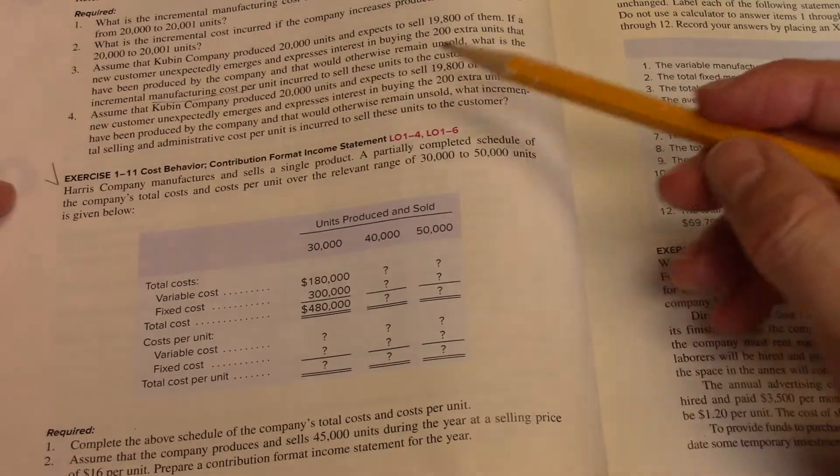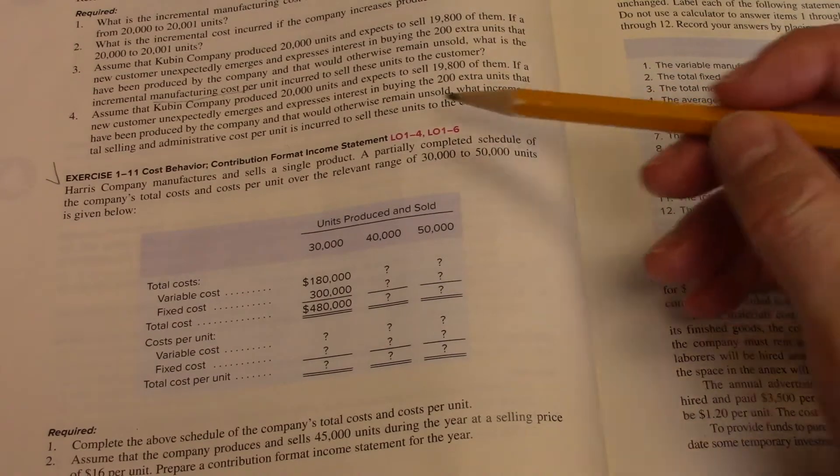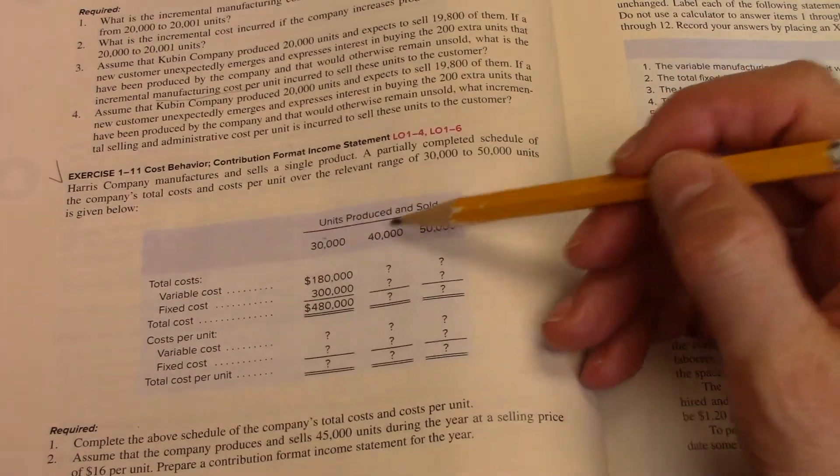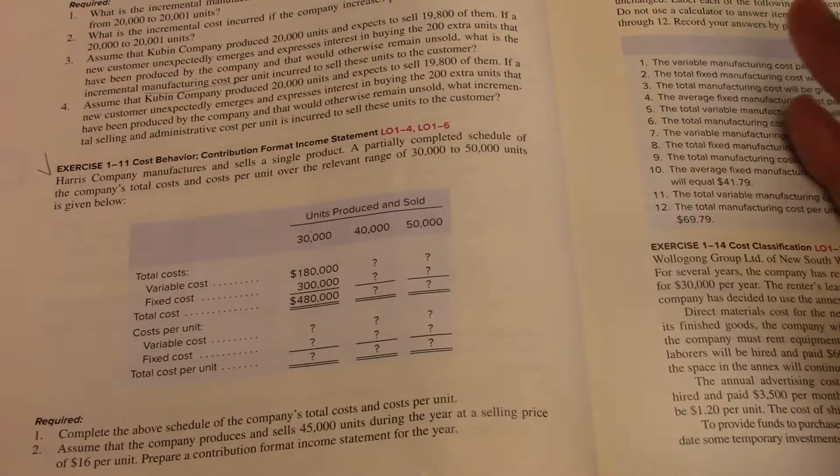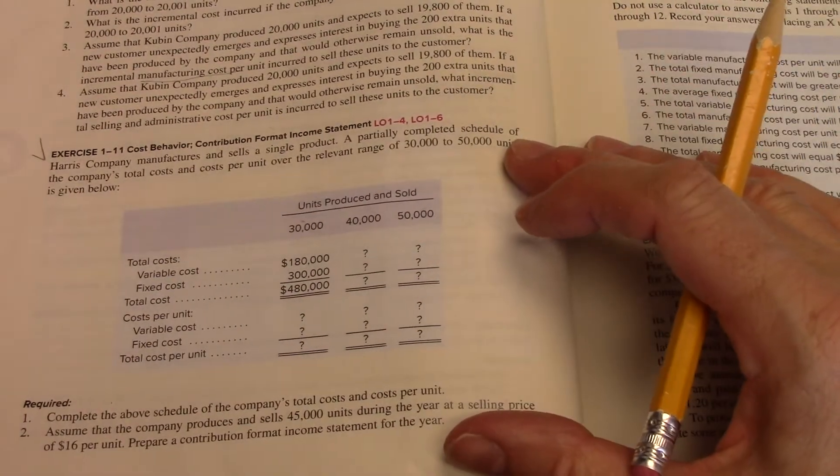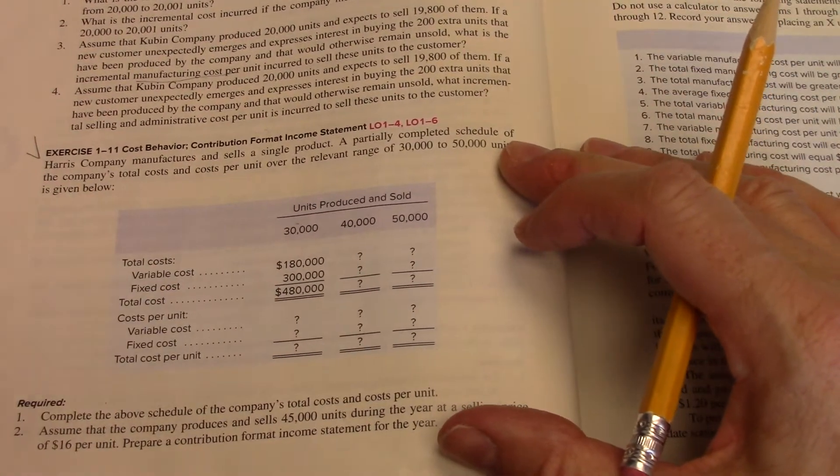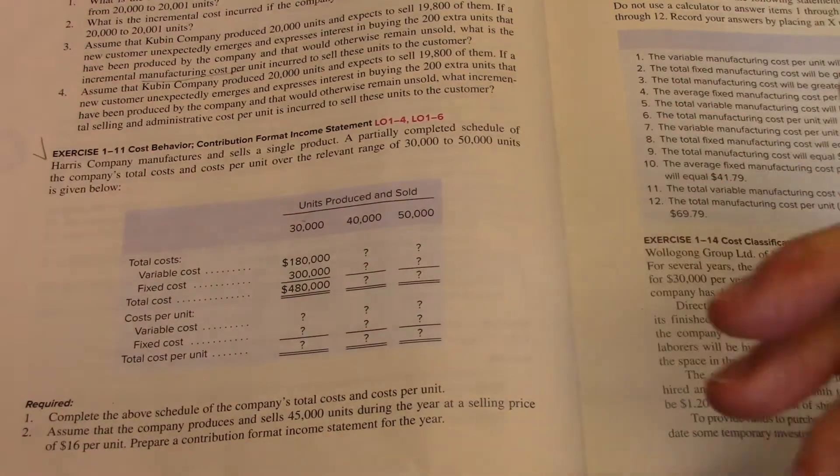So we got Harris Company, they make one product, and we're going to do a schedule of costs at $30,000, $40,000, and $50,000. And in your McGraw-Hill Connect, these numbers may be different, or your costs may be different, but the idea is going to be the same. So we've got this partially filled out table here, and our job is to finish calculating it.